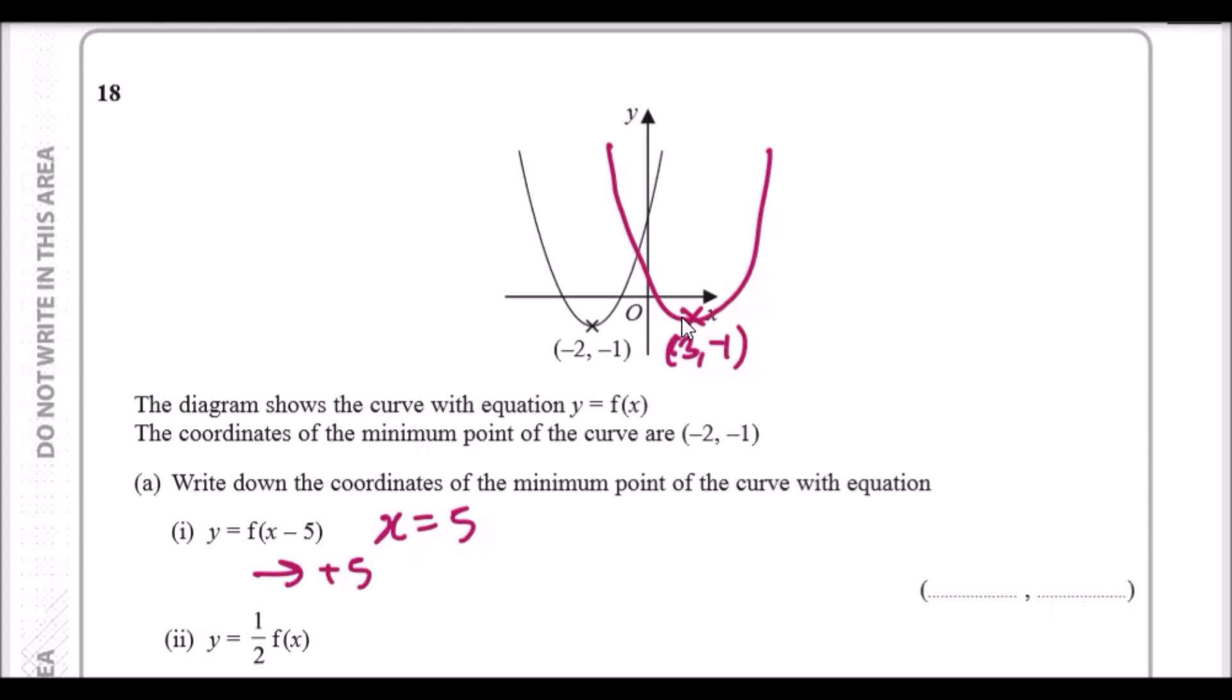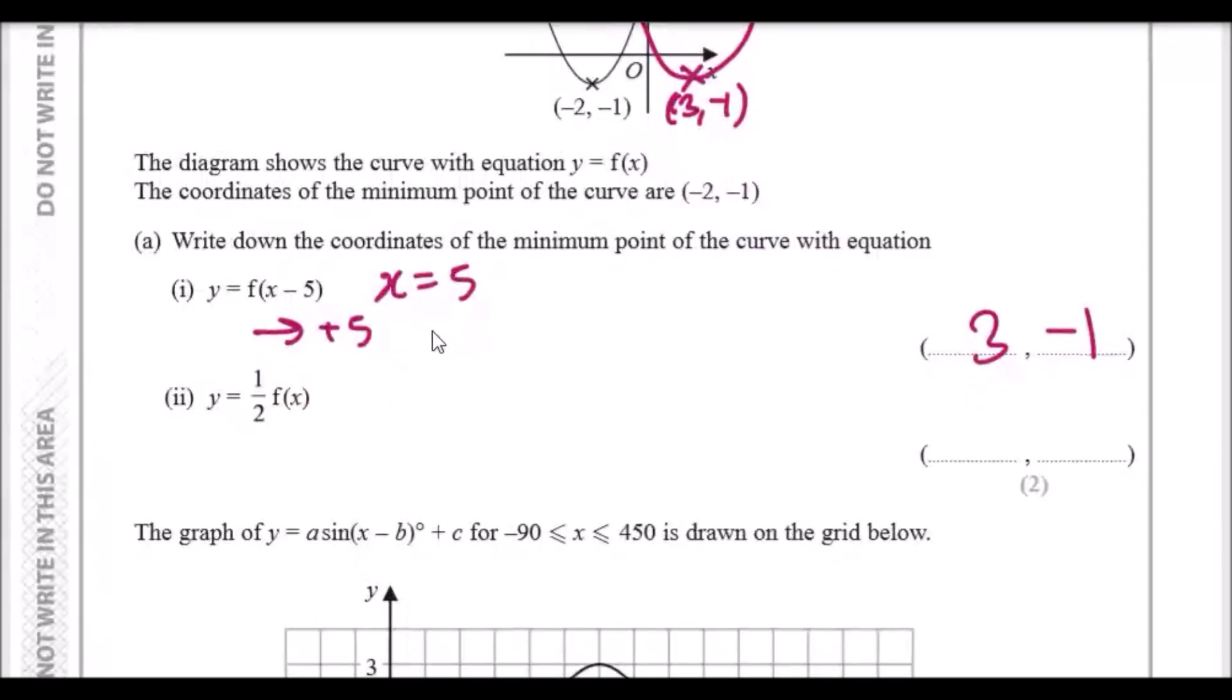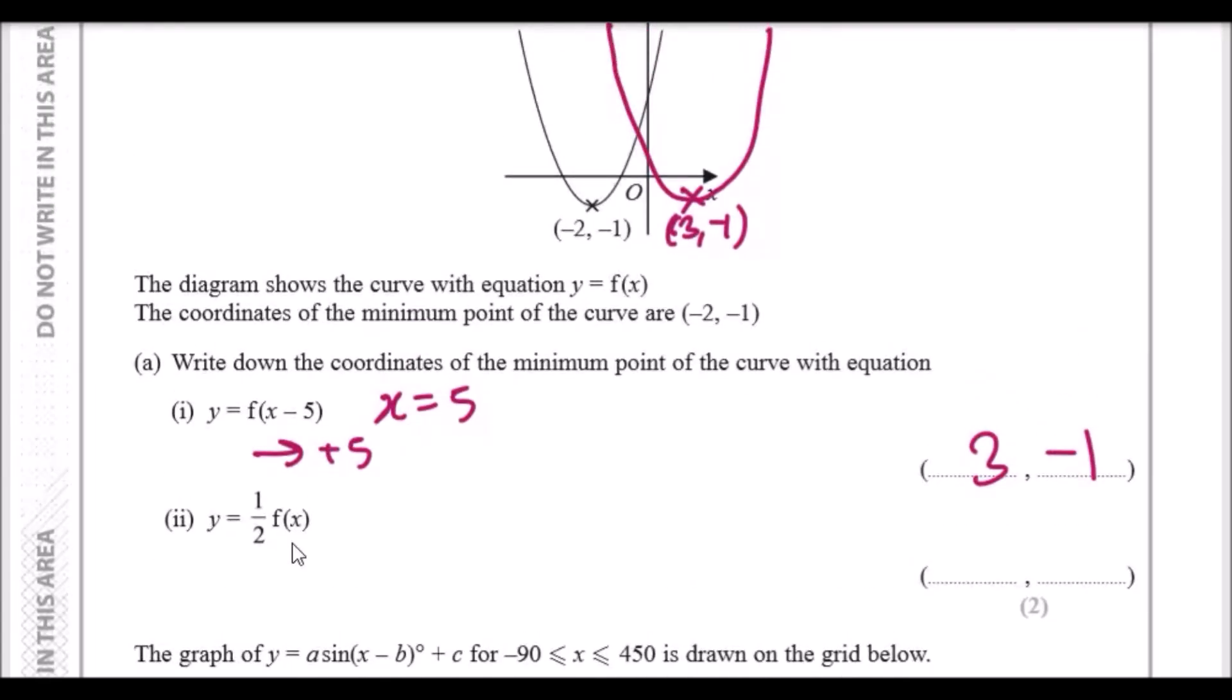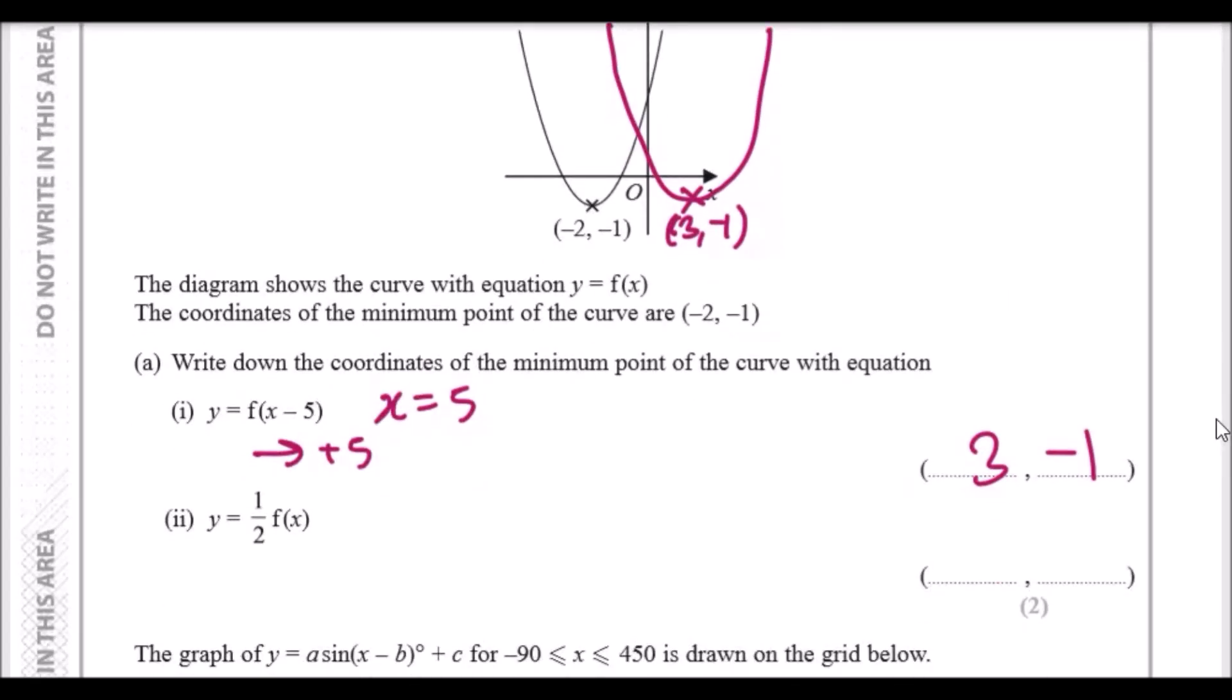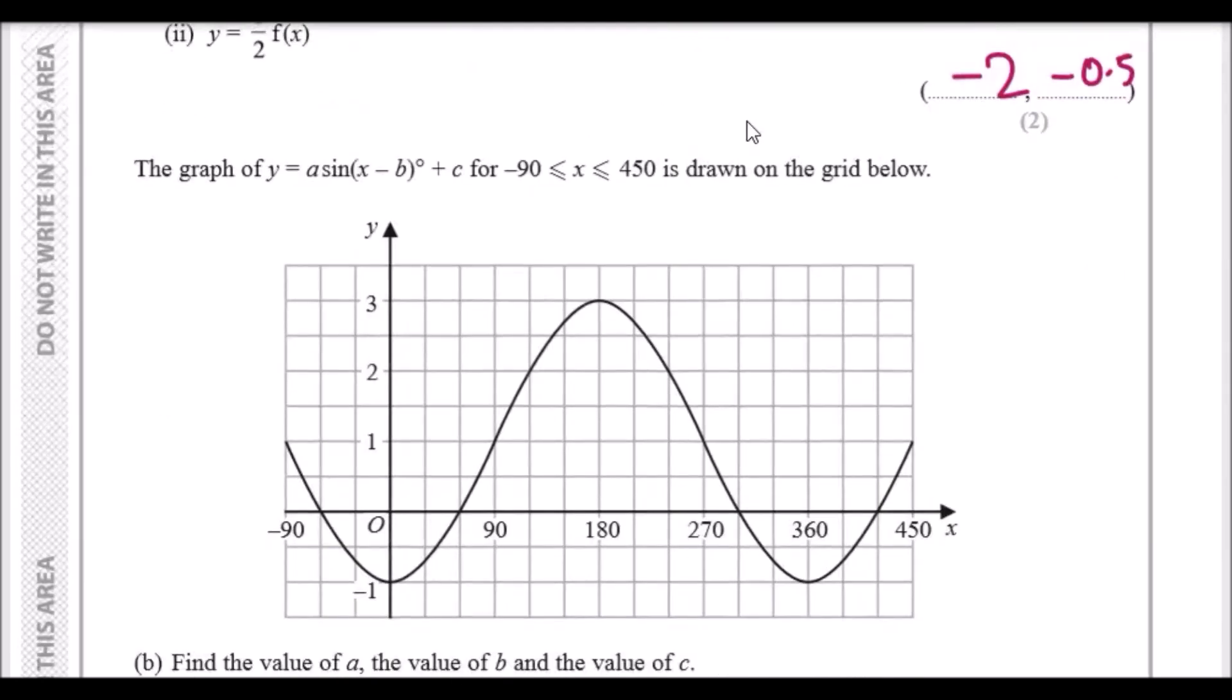Remember, only the x changes. Now this tells us to half the function, so in other words we should half the y coordinate. If you had -1, half of -1 is -0.5, and of course the x axis does not change.